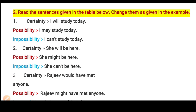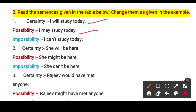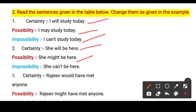Now the second task: read the sentences in the table and change them as given in the example. The first example — certainty means something that will definitely happen. So 'I will study today' is certainty. Possibility is 'I may study today' — maybe I will study. Impossibility is 'I cannot study today' — I will not study. Similarly: certainty 'She will be here', possibility 'She might be here', impossibility 'She cannot be here'.